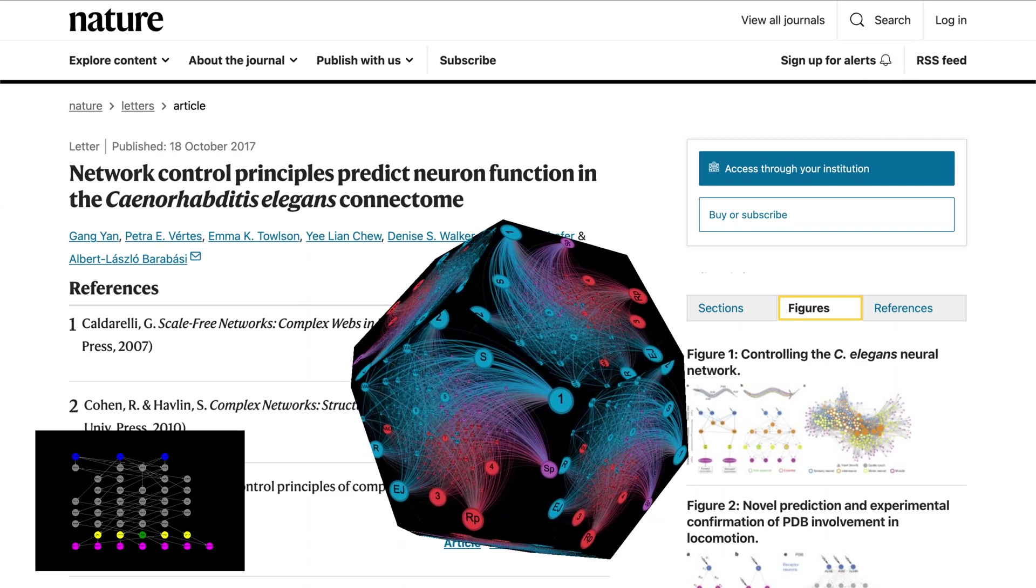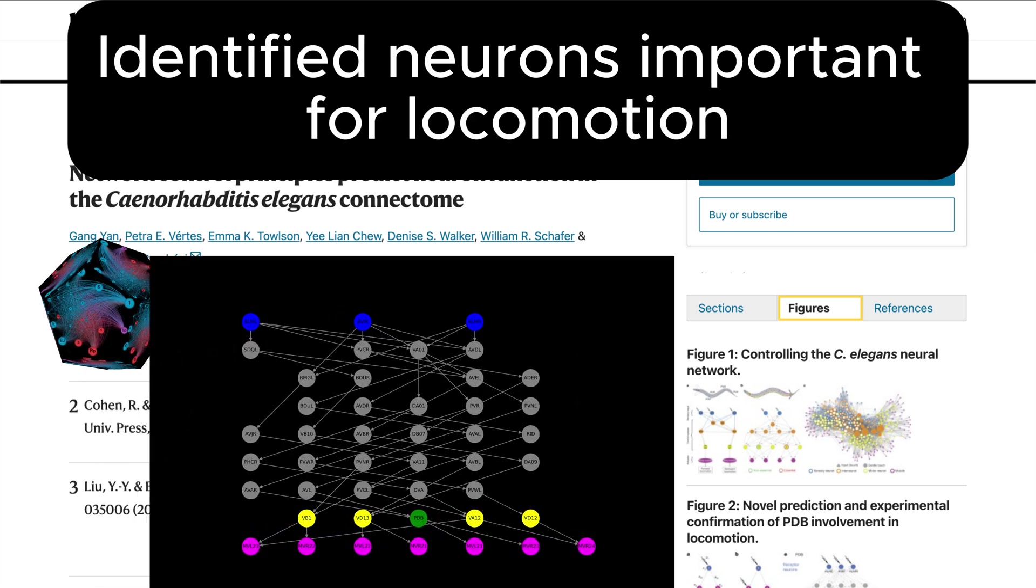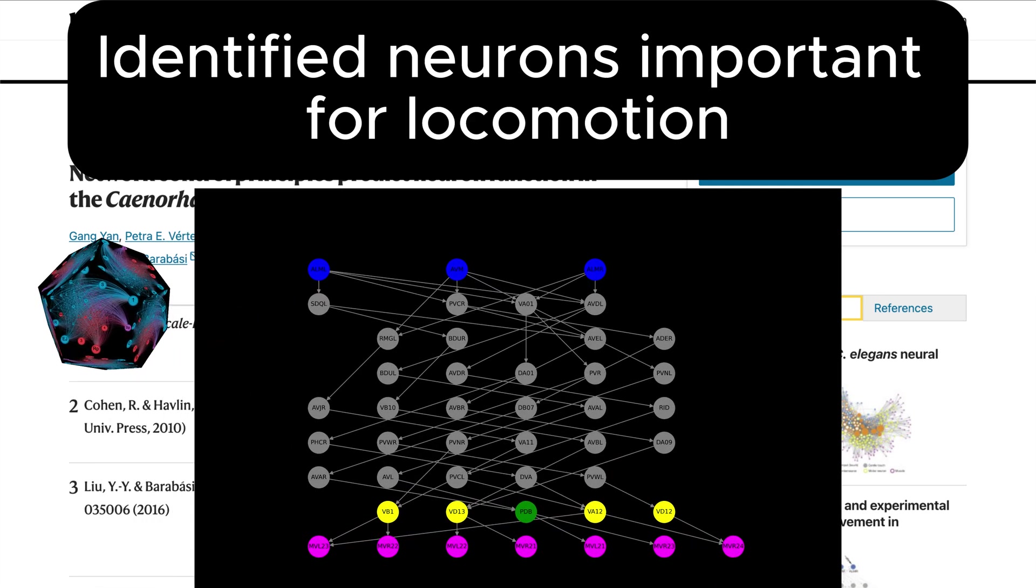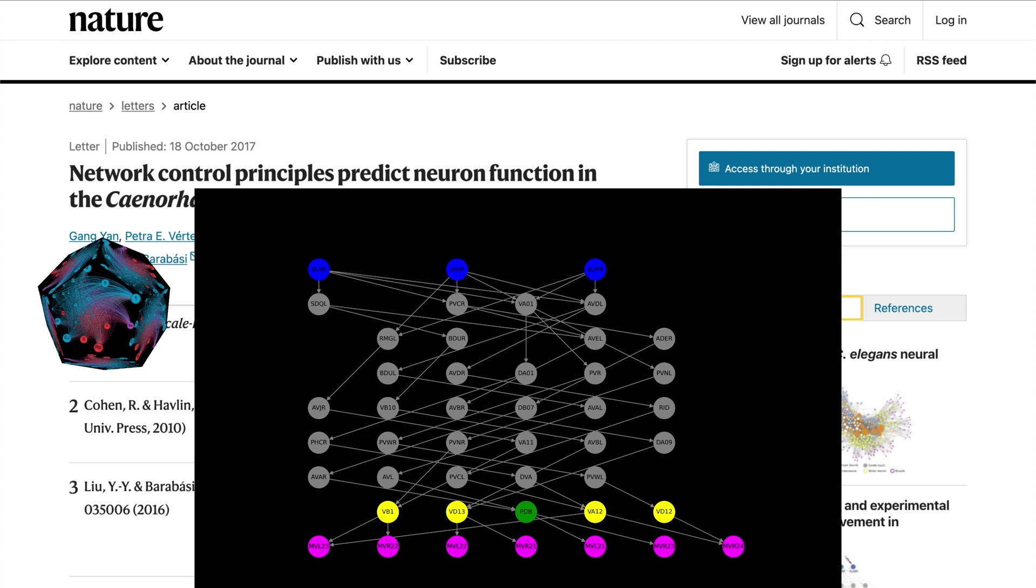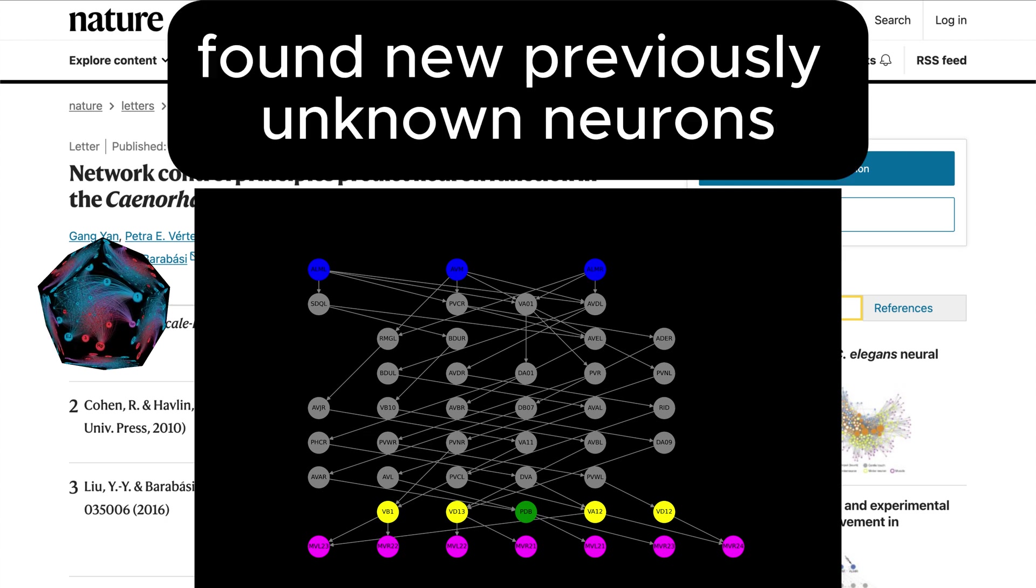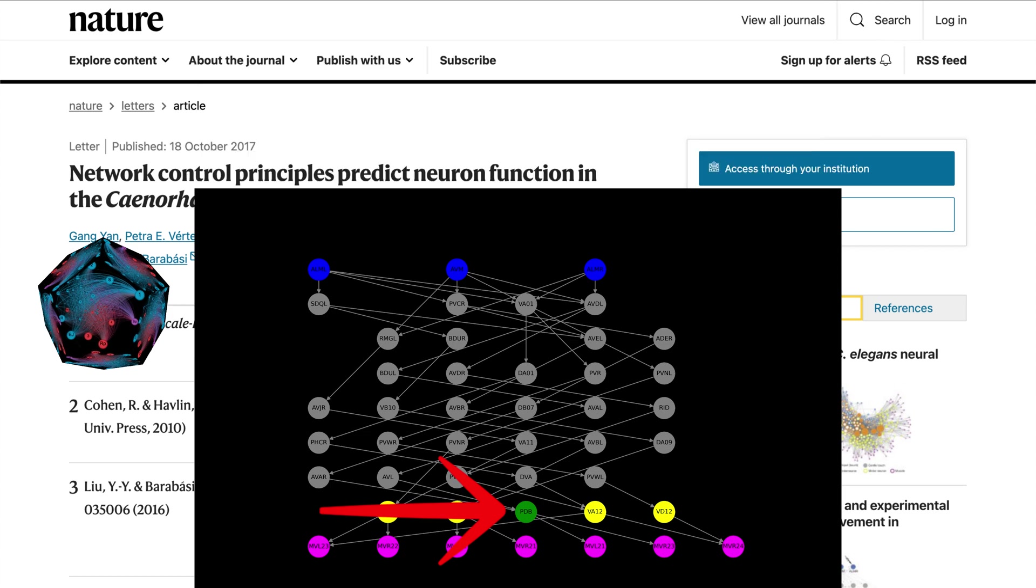Using control theory, they pinpointed which neurons were essential for locomotion. Remarkably, this approach not only highlighted neurons already known to be critical, but also predicted the role of previously unstudied neurons, such as PDB. This was a groundbreaking insight.